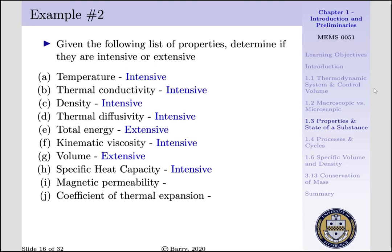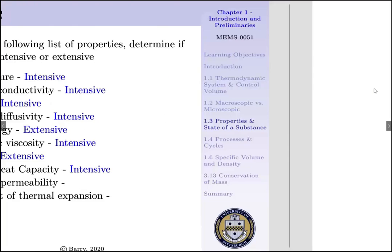Magnetic permeability is a measure of the resistance of material against the formation of a magnetic field that's being induced within, and that does not depend upon the mass either.